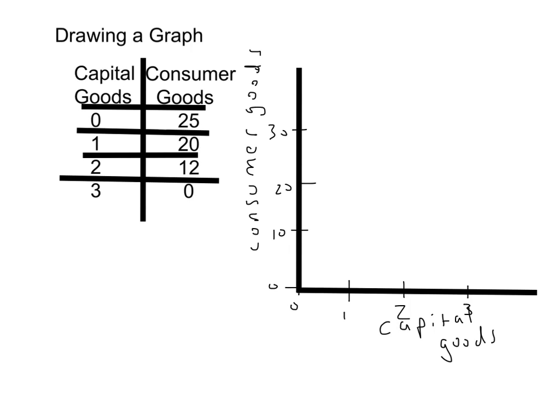So now I'm going to label zero capital goods and 25 consumer goods, put a dot at one capital and 20 consumer, put a dot at two and 12, and then three and zero. Then I connect the dots and there's my production possibility curve. It helps to show the maximum amount that I can produce given fixed technology and fixed resources.